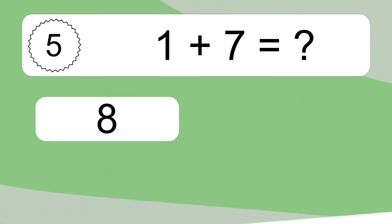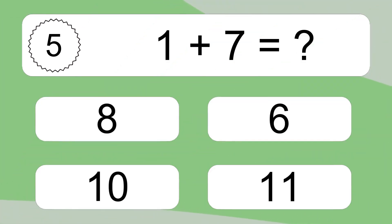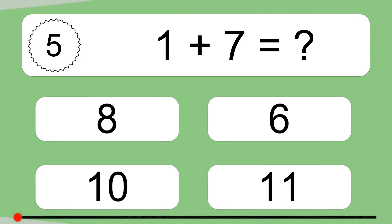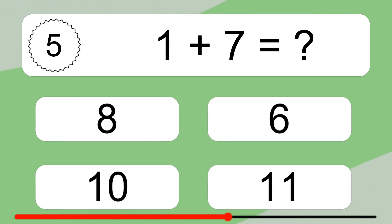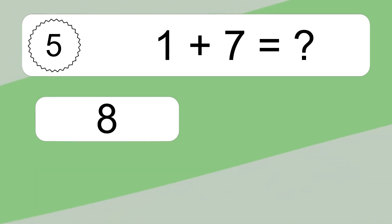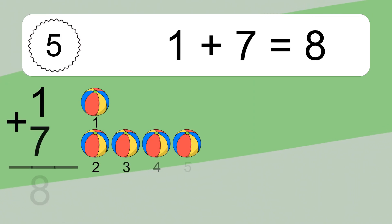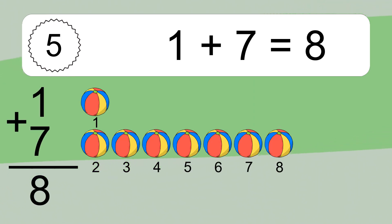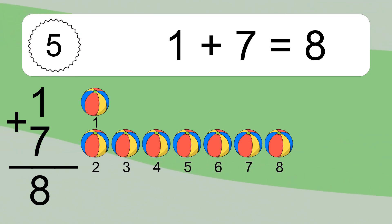1 plus 7 equals what? 1 plus 7 equals 8. Let's count it: 1, 2, 3, 4, 5, 6, 7, 8.